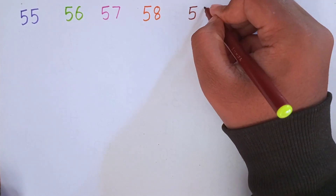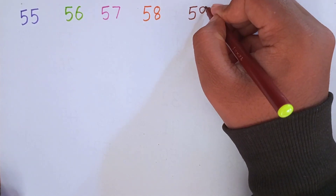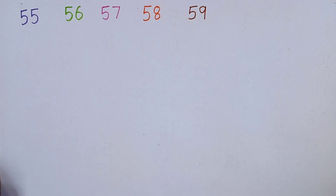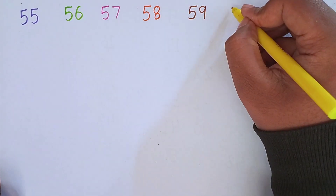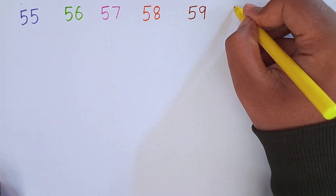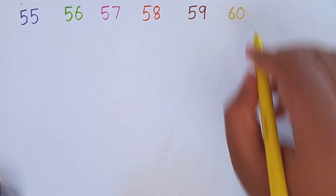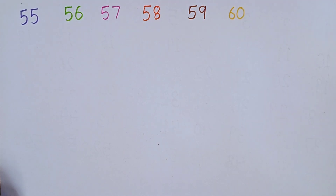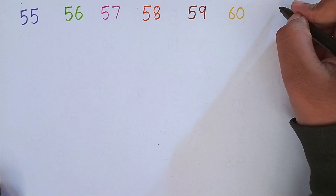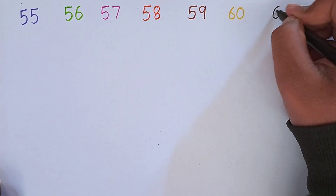After 58, the next number will be 59. 5, 9 — 59. After 59, the next number will be 60. 6, 0 — 60. Again, repeat with me: 55, 56, 57, 58, 59, 60.